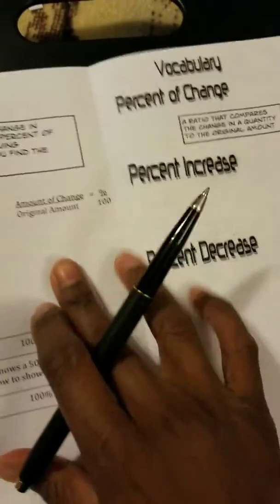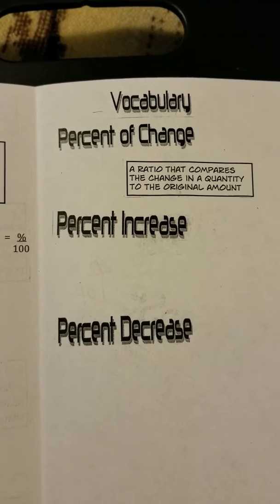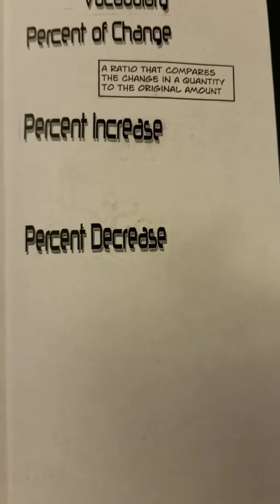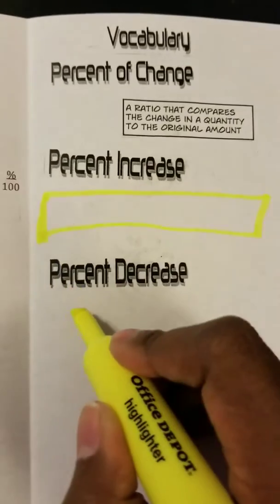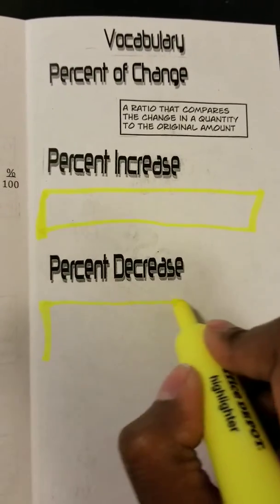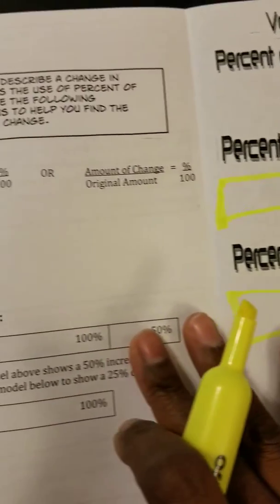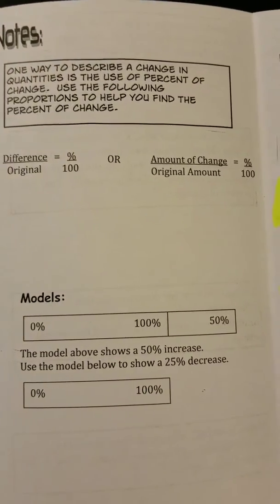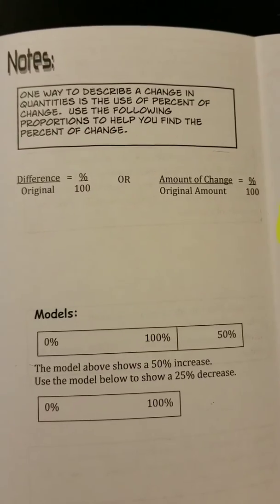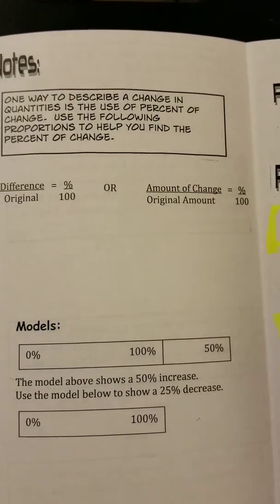Let's look at a couple of vocabulary terms. Percent of change is the ratio that compares the change in a quantity to the original amount. I want you to write your own definition of percent increase and percent decrease based on what we've talked about. Now for our notes: one way to describe a change in quantities is to use percent of change.